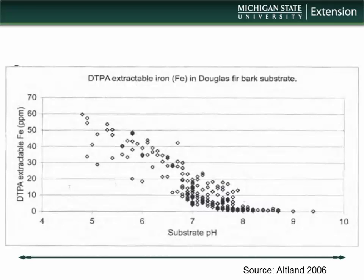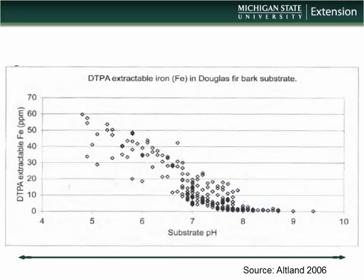Work done at Oregon State by Jim Outland on a soilless container mix shows that as substrate pH increases from roughly 4 up to 8 or 9, the availability of iron decreases sharply. So in both field and container production, watch your substrate or soil pH, because as it rises above about 6.0–6.5 in the field you can start getting into pH-induced problems with iron.